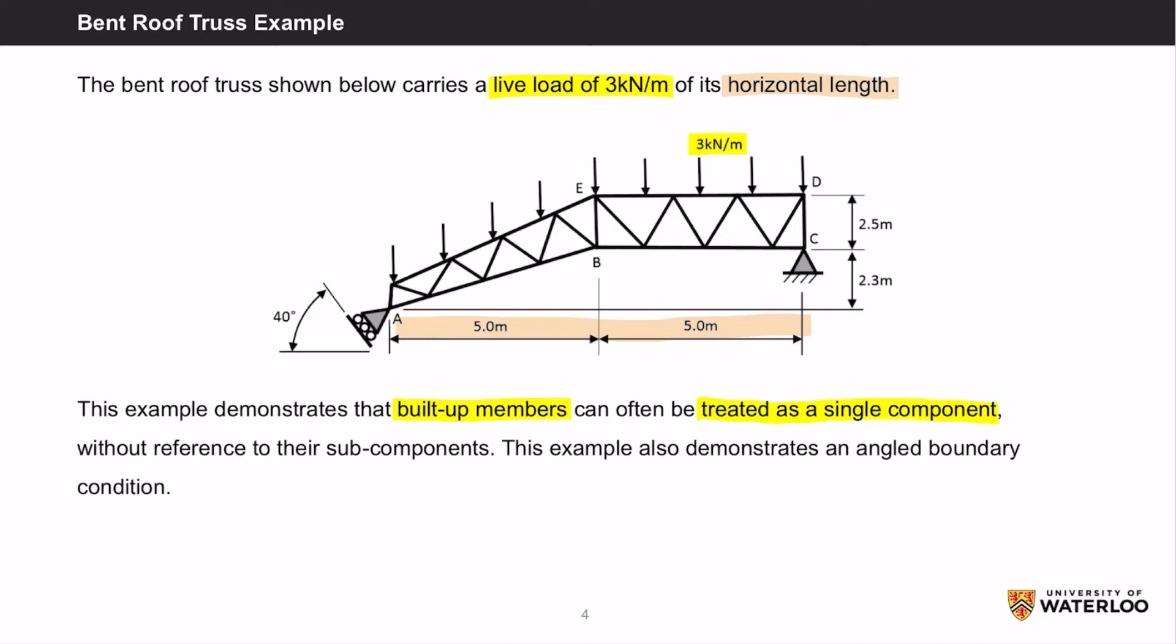Essentially what this means is that this is a bent roof truss that is made up of all these interconnected members, but for the purpose of this analysis, we can just consider it to be a solid block, which will simplify this problem.